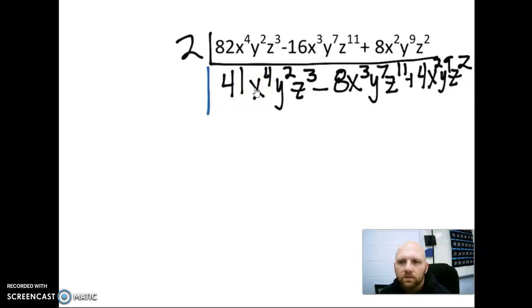So then we say, does every term have at least an x to the second power? And that answer is yes. We see an x to the fourth, x to the third, and an x to the second. Does every term have at least x to the third? And that answer is no. So the biggest we can divide by would be x². So we're going to divide all these by x².